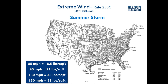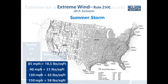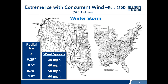Rule 250C represents an expected summer storm and has a 60-foot exclusion — it only applies to poles extending more than 60 feet above ground. Along coastal areas, wind speeds and pressures increase significantly; 90 mph equals 21 pounds per square foot, and 130 mph equals 43 pounds per square foot. Rule 250C addresses summer storms without ice. Rule 250D represents a winter storm with extreme ice — radial ice ranging from zero to one inch — and whatever concurrent wind speed was recorded, from 30 to 60 mph.